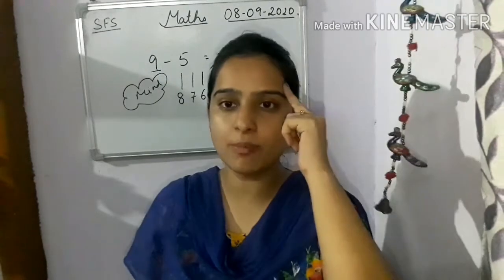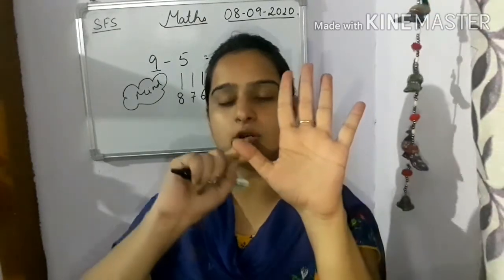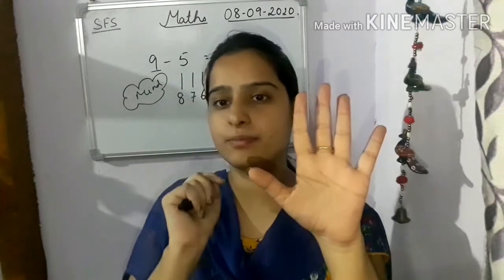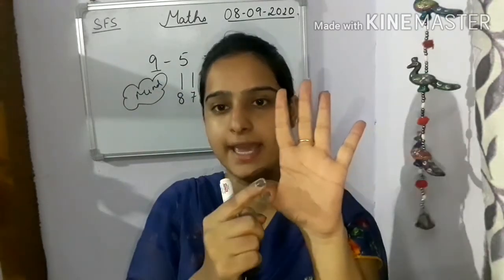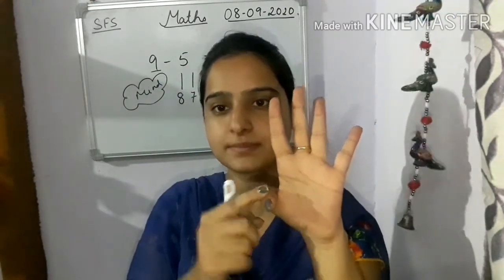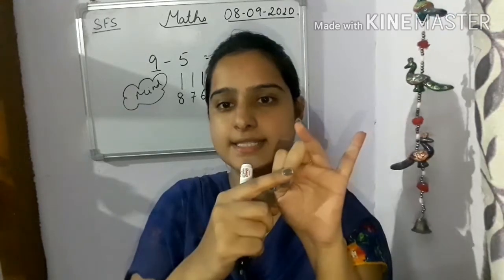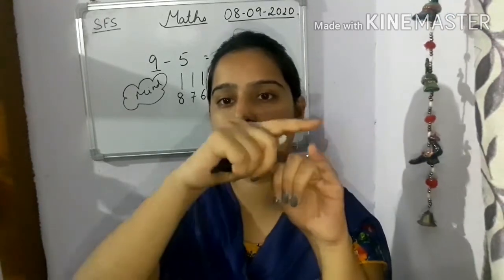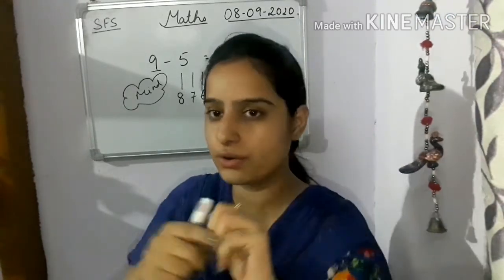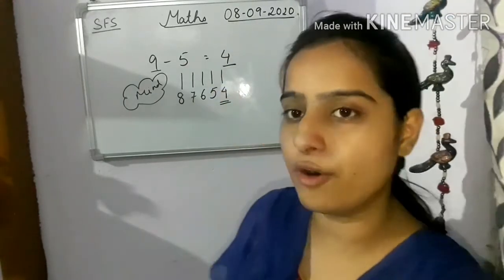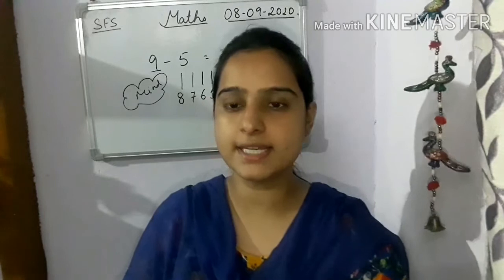Keep 9 in our mind. Open 5 fingers. Now start doing backward counting before 9 — that is 8, 7, 6, 5, 4. So the difference is 4. The answer is 4. Isn't it? It's easy.